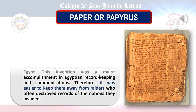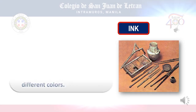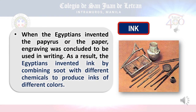First, Paper or Papyrus. Egyptians were not the first to develop a writing system, but they made writing easier by developing paper made from papyrus, a plant found abundantly in Egypt. This made record-keeping and transportation of records easier, since paper from papyrus is much lighter compared to cuneiform clay tablets. After developing papyrus paper, they also invented ink by combining different chemicals to be used in writing.